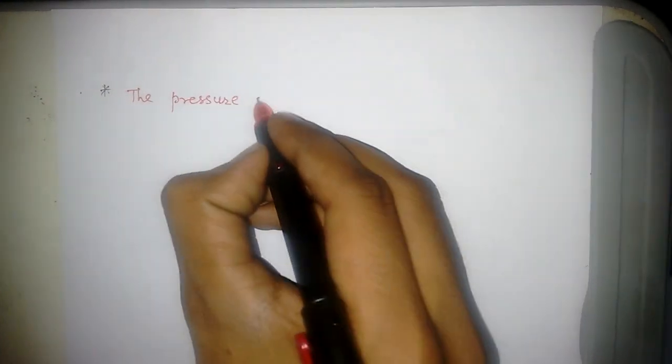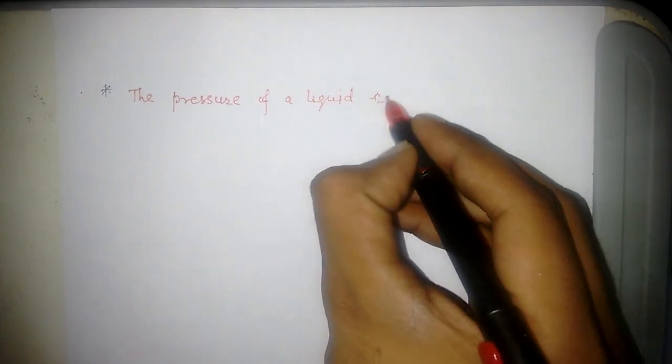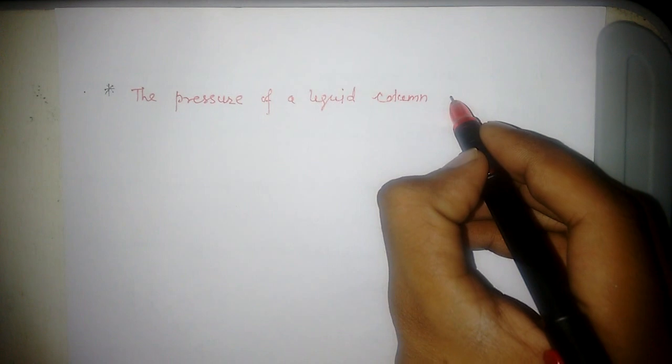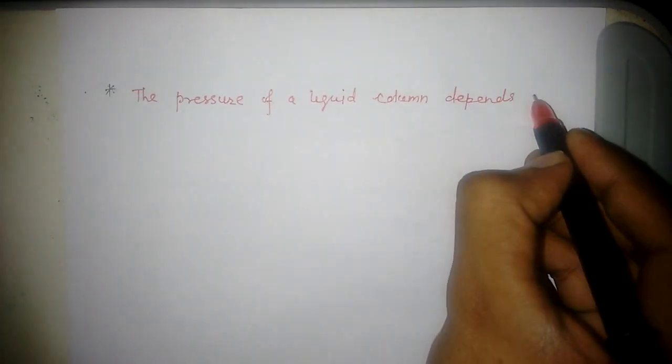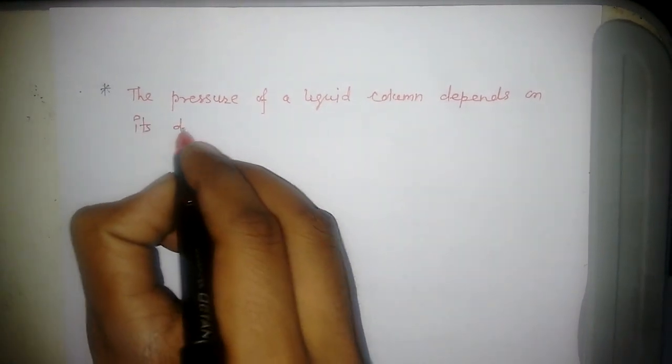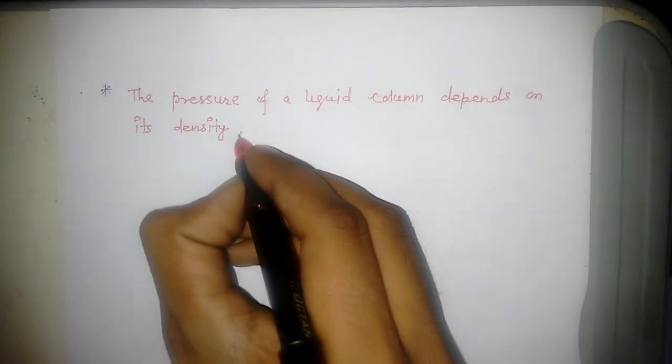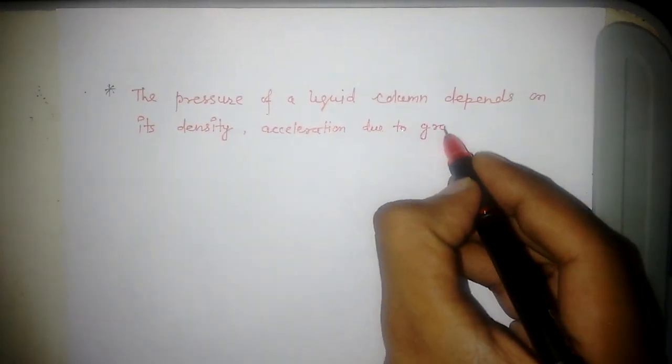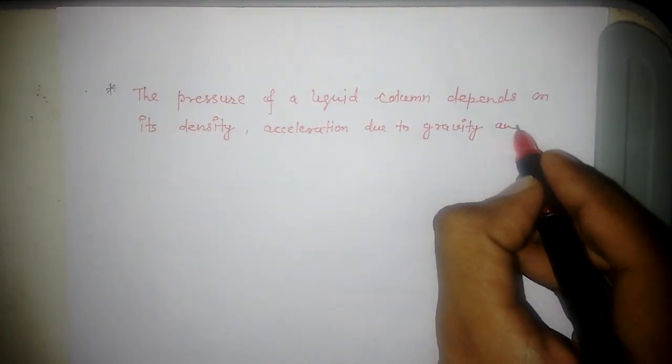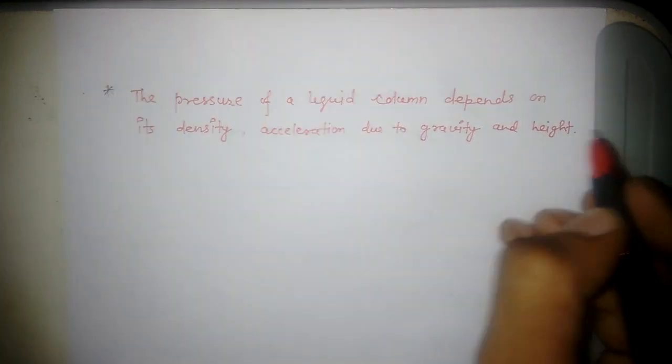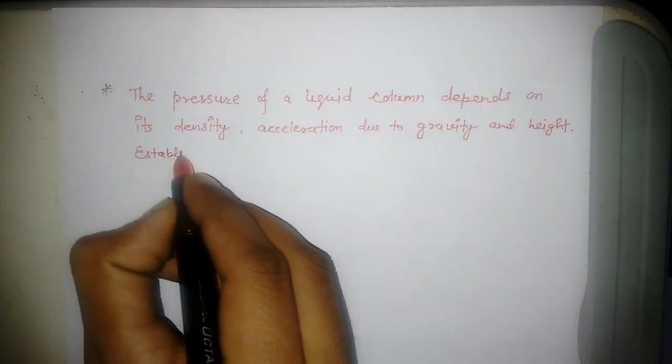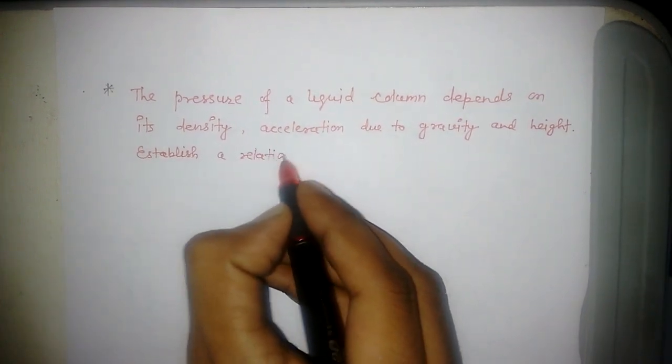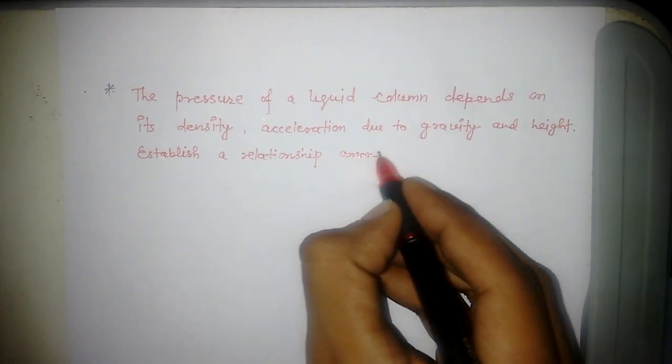The pressure of a liquid column depends on its density, acceleration due to gravity, and height. Establish a relationship among these physical quantities.